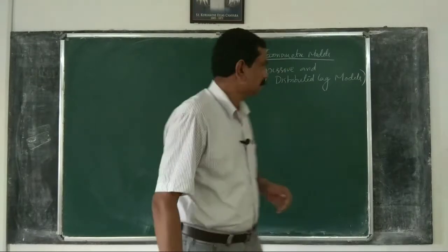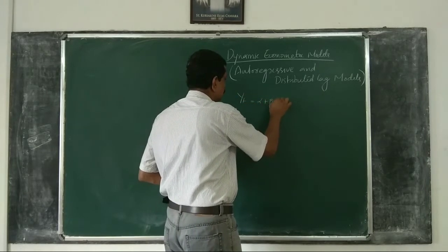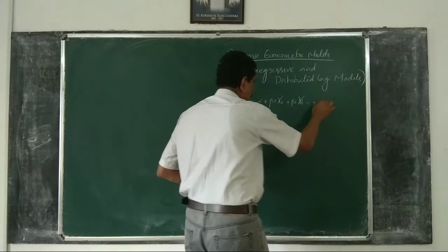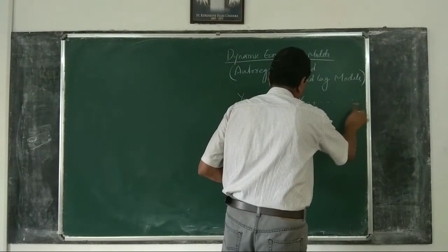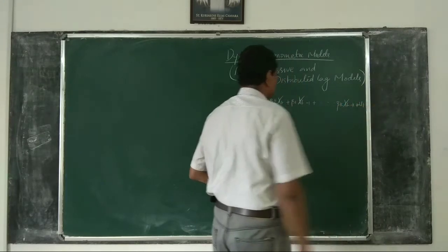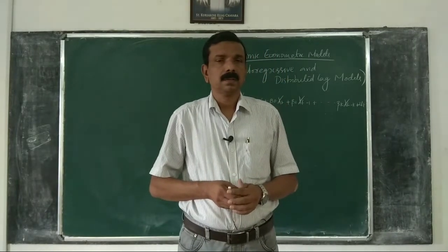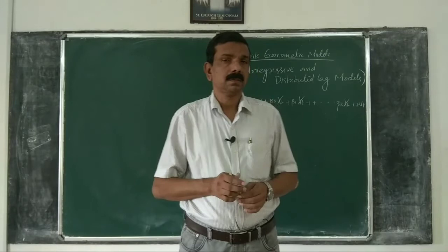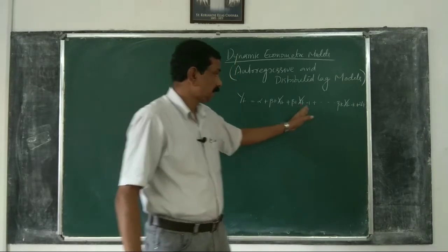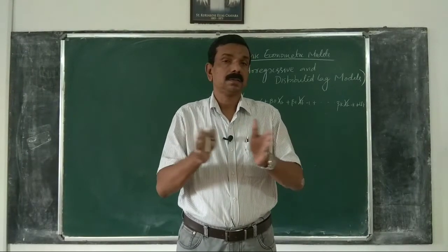As an example, suppose that we specify a model as alpha plus beta 0 xt plus beta 1 xt minus 1, etc., beta k xt minus k plus ut. This is an example of a distributed lag model, because this regression model involves not only xt, but also lagged values of xt: t minus 1, t minus 2, etc., t minus k. Such models are known as distributed lag models.